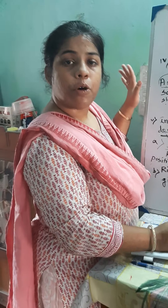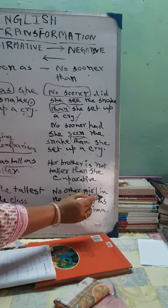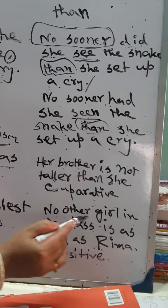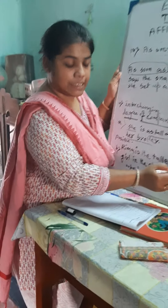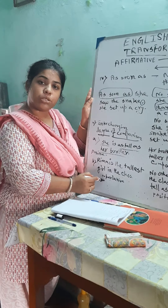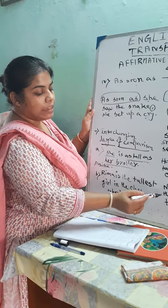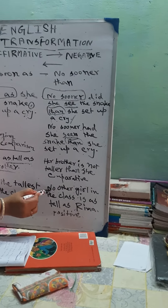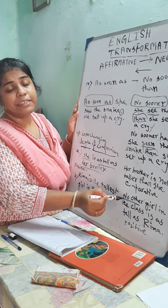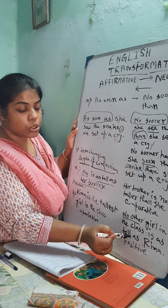Another example: 'Rima is the tallest girl in the class.' This sentence is in superlative degree. It can be changed to a positive degree negative sentence: 'No other girl in the class is as tall as Rima.' So 'no other' is used, followed by the last part of the sentence — 'girl in the class' — then 'as tall as,' and finally the subject 'Rima.'